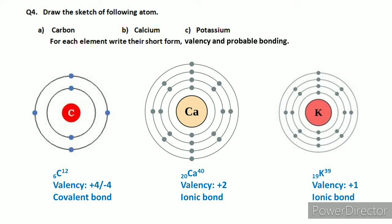Every element wants eight electrons in its last shell — the valence shell. If an atom does not have eight electrons in its last shell, it will either give electrons, accept electrons, or two atoms will share electrons to complete eight. Carbon has four electrons in its last shell and needs eight to be stable — it is half-filled. Eight divided by two is four, so carbon can either give four electrons or accept four. When the outermost shell is half-filled, elements form covalent bonds by sharing electrons. This is why carbon forms covalent bonds.